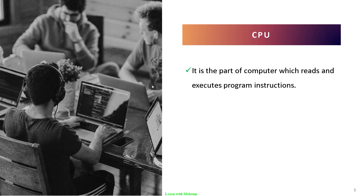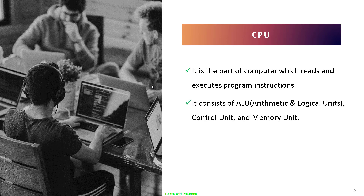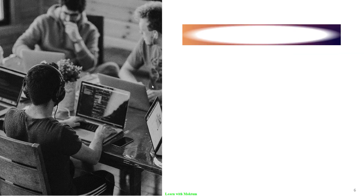Once input is given, it enters the CPU. The CPU is the part of a computer which reads and executes program instructions. The main purpose of the CPU is to read the data and execute it, which is why it is called the brain of the computer. It consists of the ALU — arithmetic and logical unit — the control unit, and the memory unit.